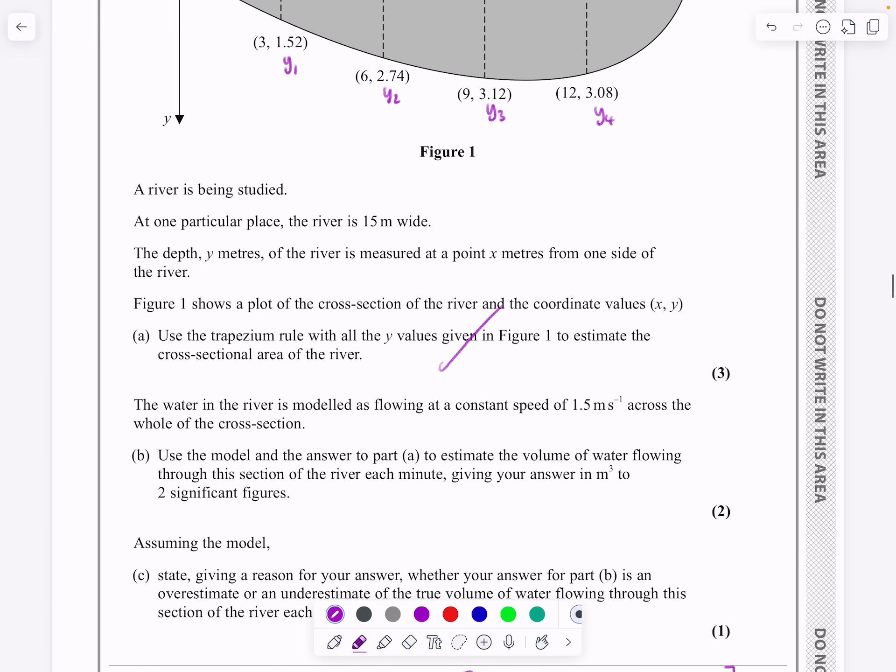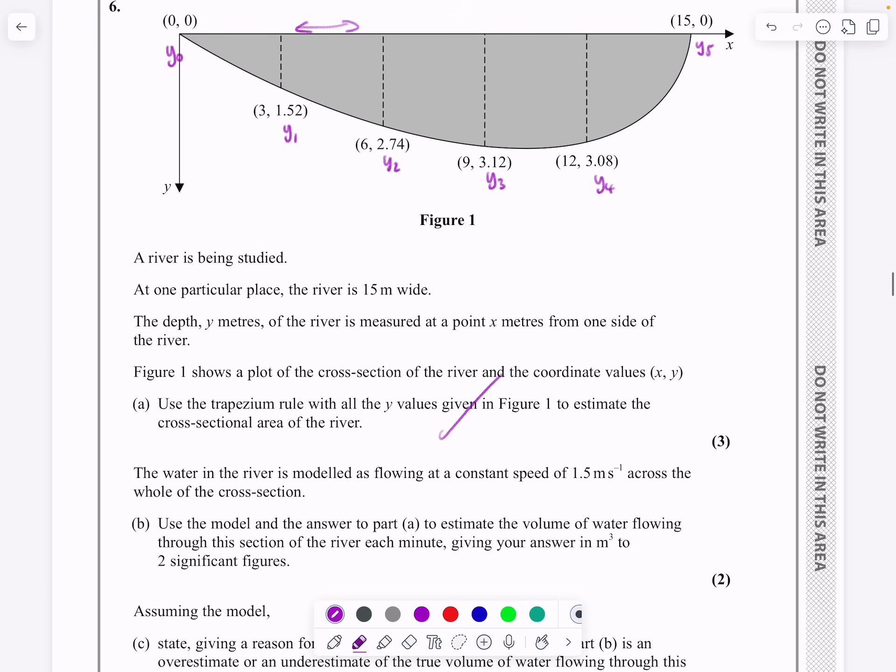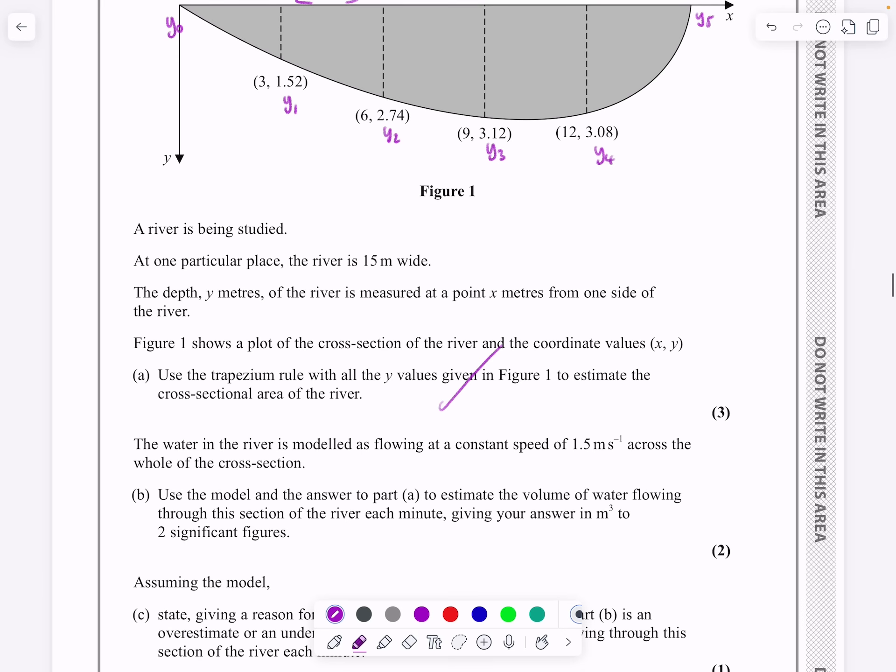It then says the water in the river is modelled as flowing at a constant speed of 1.5 meters per second across the whole cross-section. Use the answer A to find the volume of water flowing through. So what we've got is that the volume flowing through each minute.